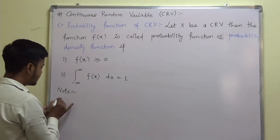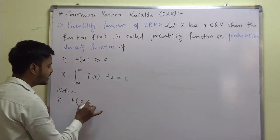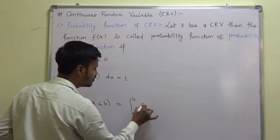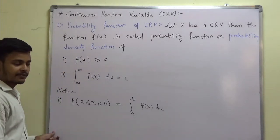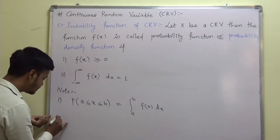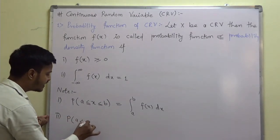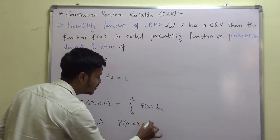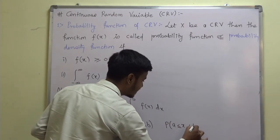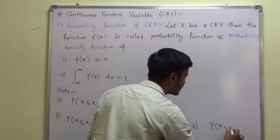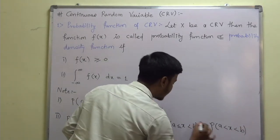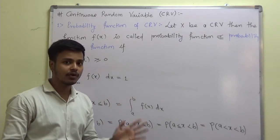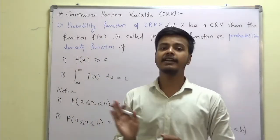An important note for this probability function: if you have to find the probability of a ≤ x ≤ b, it is given by the integral from a to b of f(x) dx, where a is the lower limit and b is the upper limit. Also, whether you write a ≤ x ≤ b, a < x ≤ b, a ≤ x < b, or a < x < b, all these are the same and can be replaced by the integral from a to b of f(x) dx.